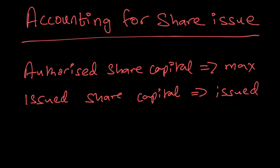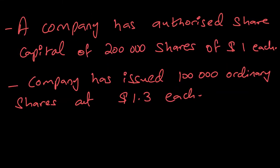Our job here is to understand how to record these shares and how to account for them. Let's take a look at an example. Let's say a company has an authorized share capital of 200,000 shares of $1 each, which means the maximum the company can issue is 200,000 shares and each share is worth $1.